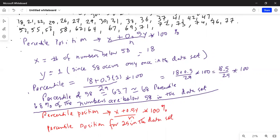x is how many numbers are below 25, which is 3. 3 plus 0.5 y - 25 appears once in the data set - divided by n, n is 29, whole thing is multiplied by 100. So this is 3.5 divided by 29 times 100. And 3.5 multiplied by 100 divided by 29 is 12.06 percent.